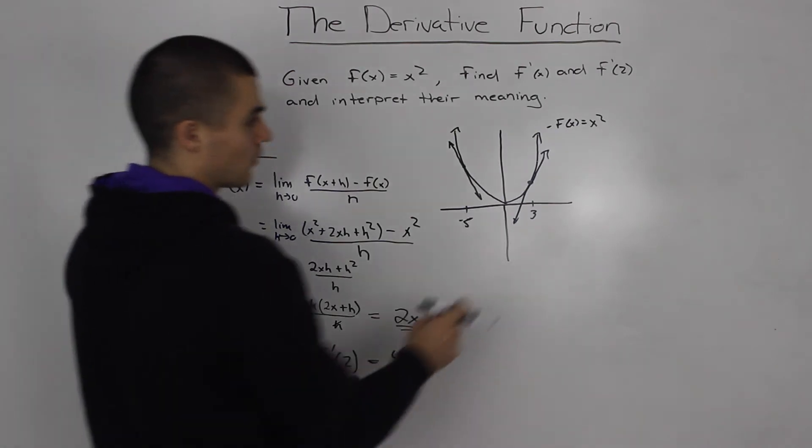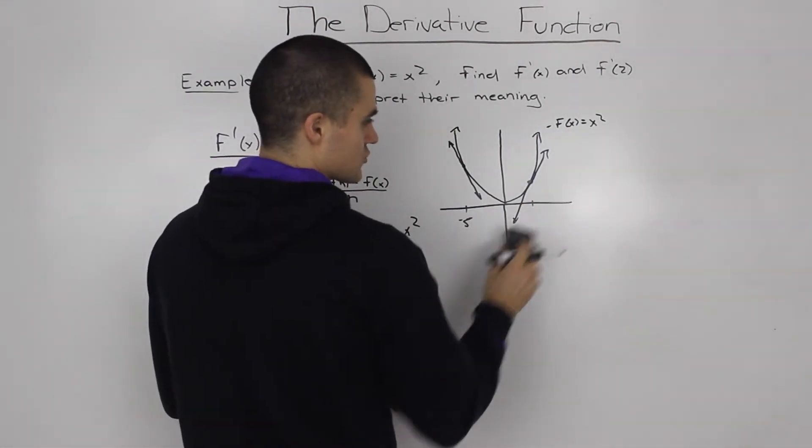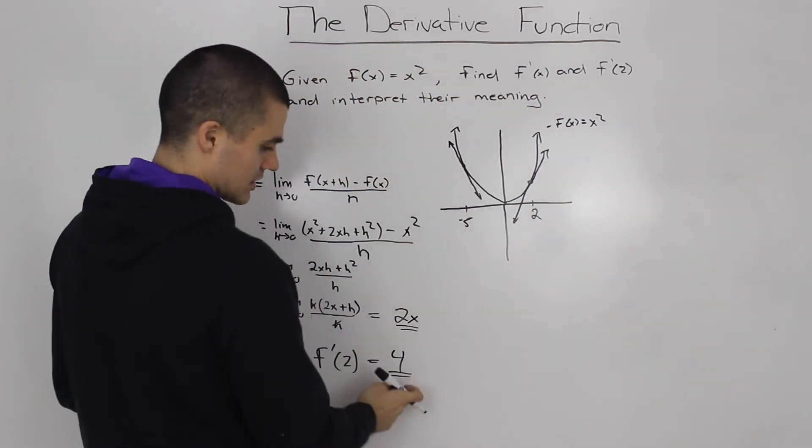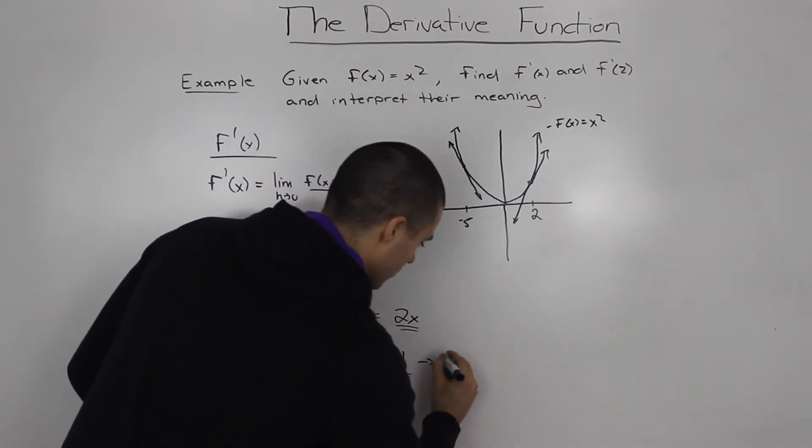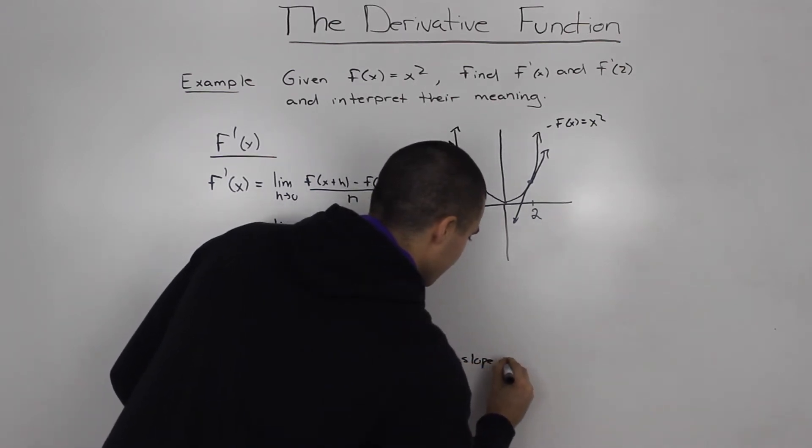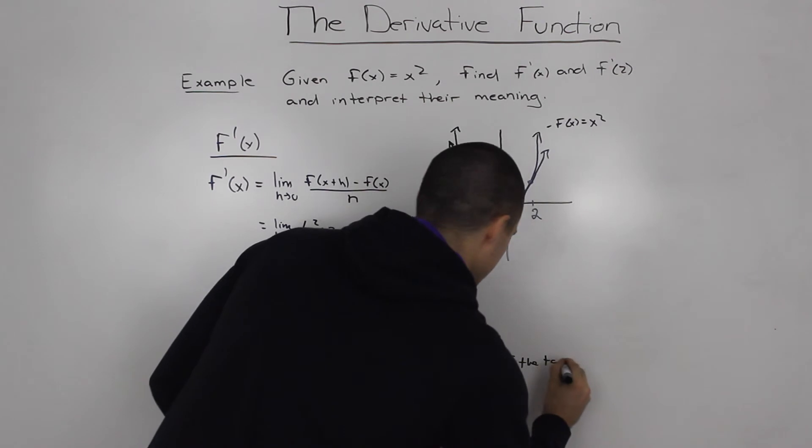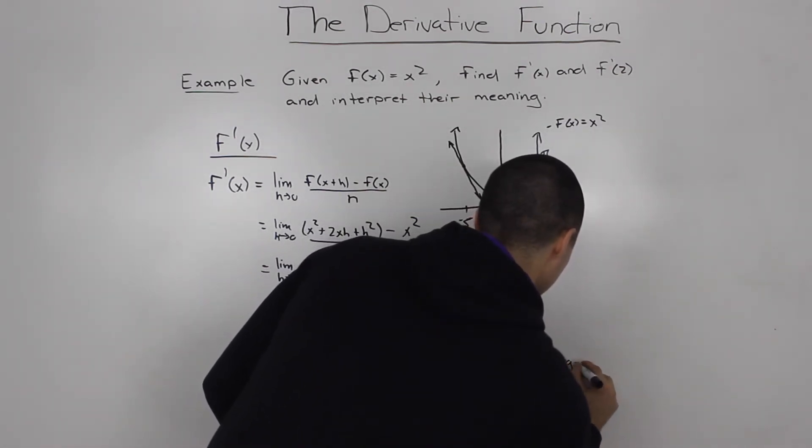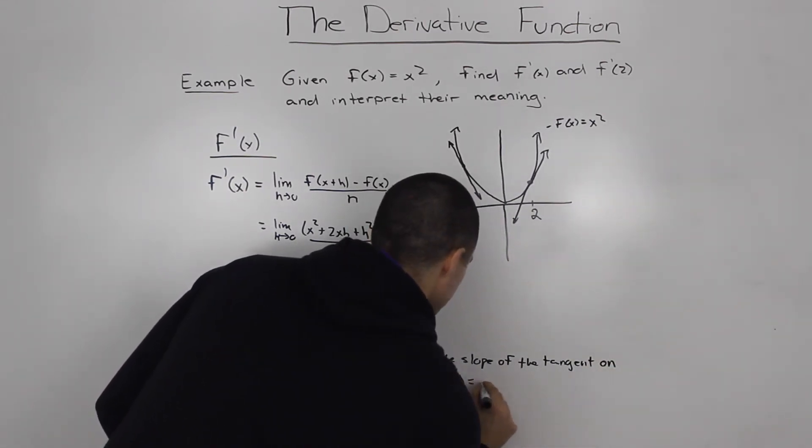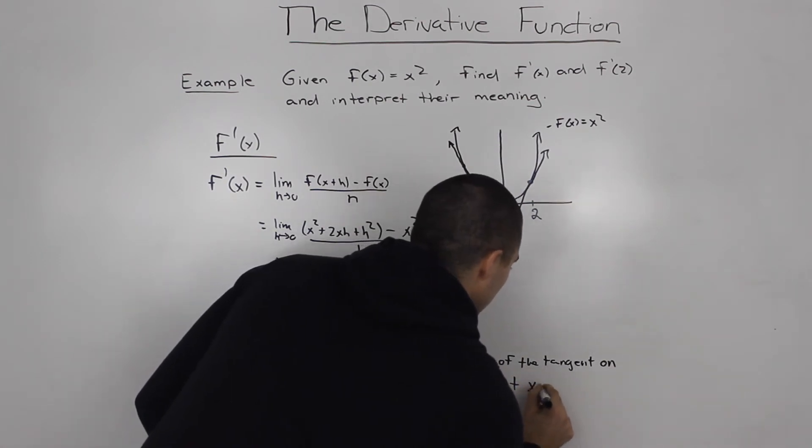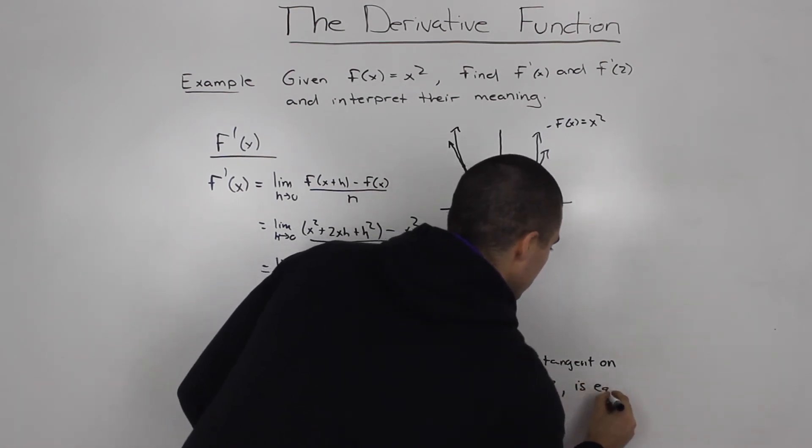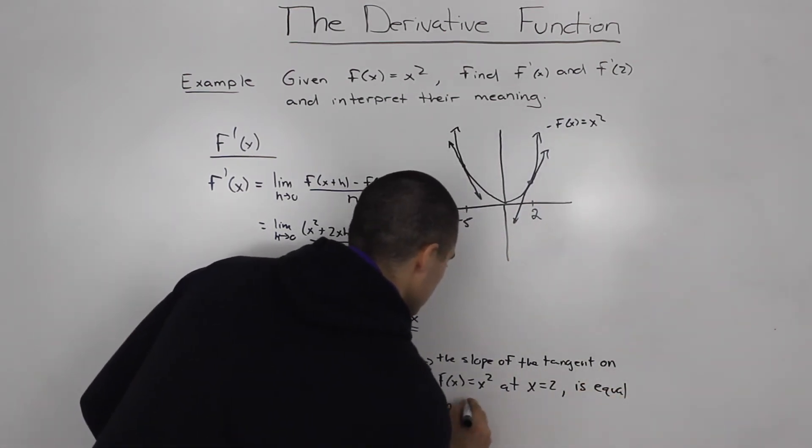So, what's the meaning of that? Well, at point 2, let's change this 3 to a 2 here. At point 2, the slope of the tangent is going to be 4. So, this means that the slope of the tangent on the function f(x) equals x² at x equals 2, the slope is equal to 4.